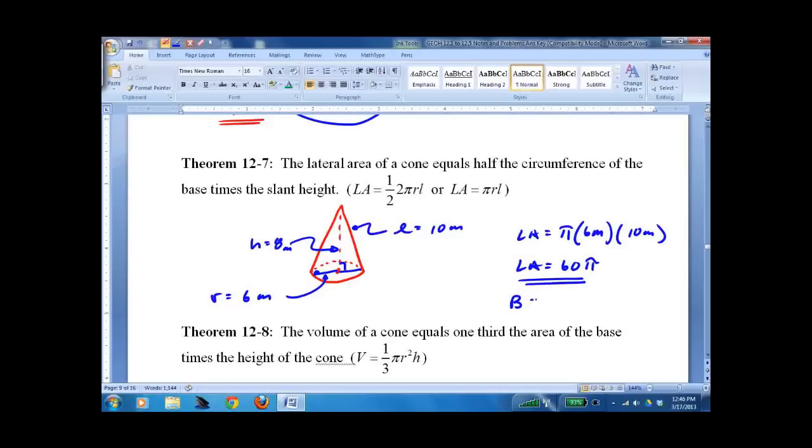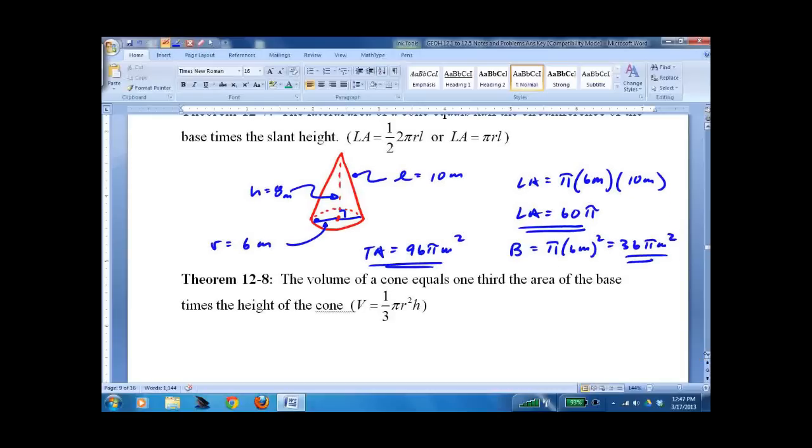What's the base area? π times 6 squared. 36π meters squared. And the total area, just add them together. 96π meters squared. You know, you just, you start to get good at it. You start to get used to it. The area of the base. Well there's only one base now. I don't have to add two of them. The cylinder had two of them. So on and so on.